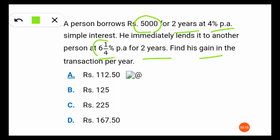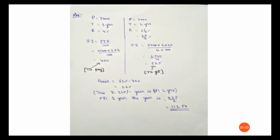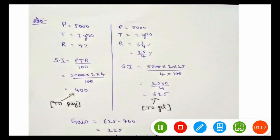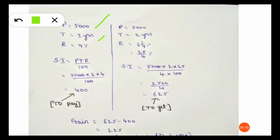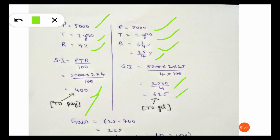Since he lent the money at a higher rate of interest, he will obviously get profit. The principal is 5000 rupees, time period is two years, rate is 4 percent. Using SI = PTR/100, we get 400 rupees — this is the simple interest to be paid. For the money lent at 6 and 1/4 percent (25/4 percent), with principal 5000 and time two years, the simple interest comes to 625 rupees. He will receive 625 rupees but has to pay 400 rupees.